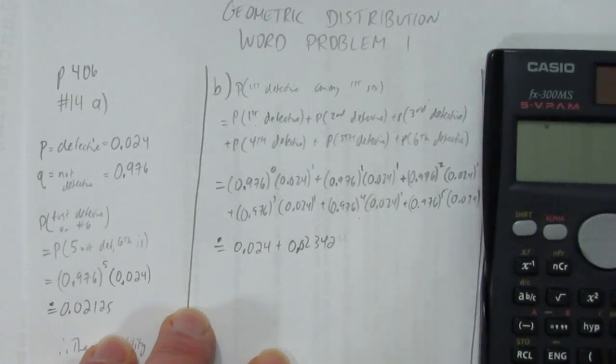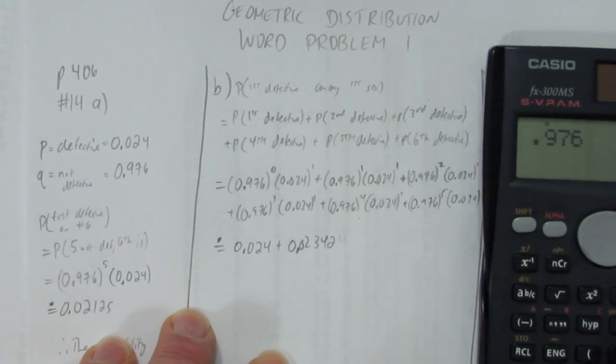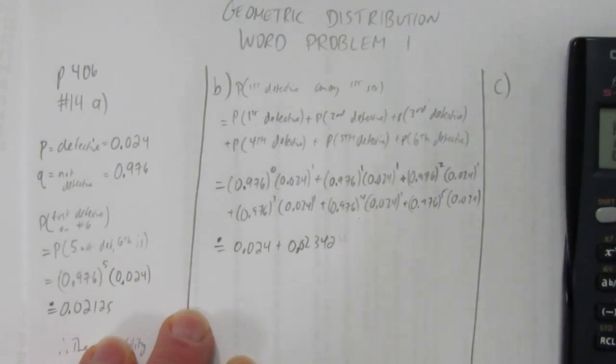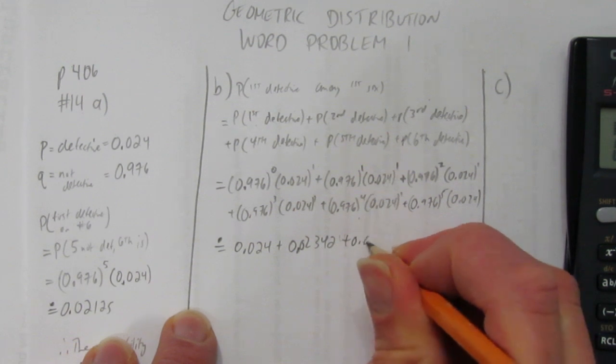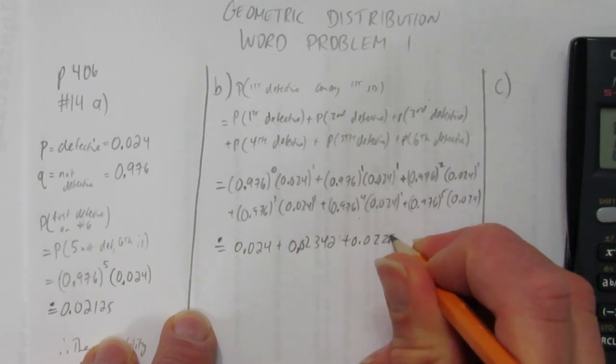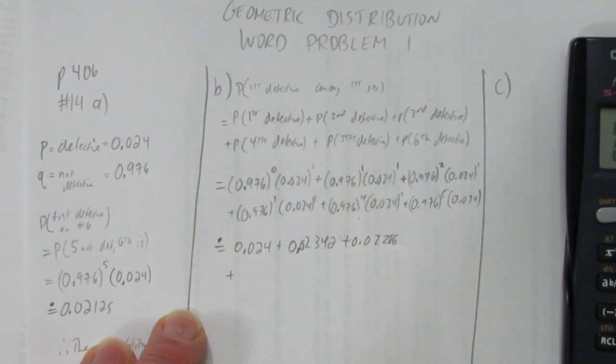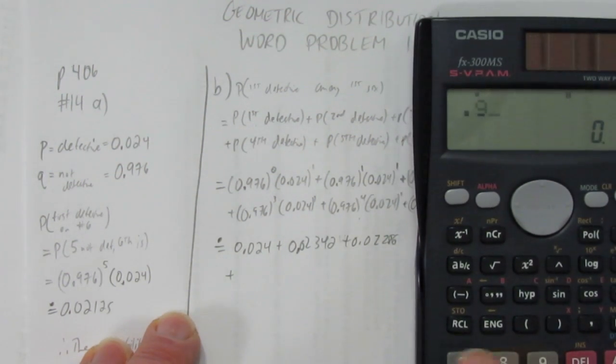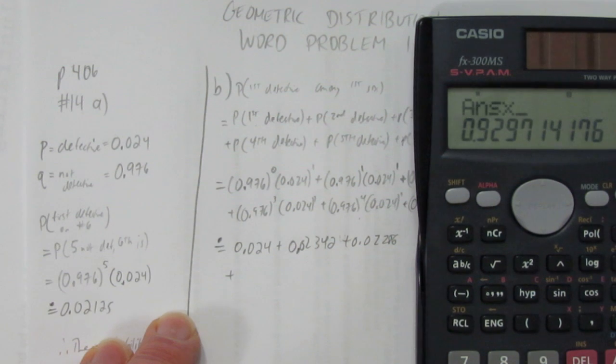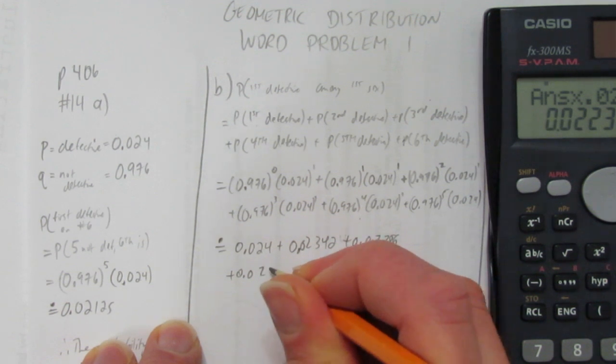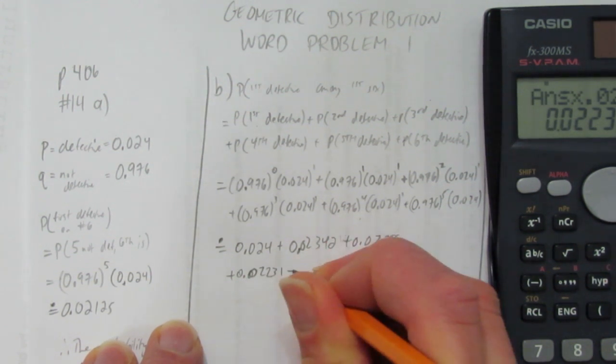Next one, 0.976 to the power of two, or squared, times 0.024, and I get 0.02286. Plus, I'm keeping the same symmetry here. 0.976 to the power of three, times 0.024, and you get 0.02231.